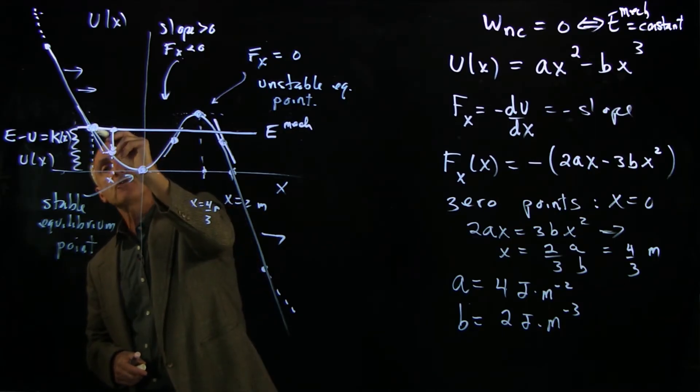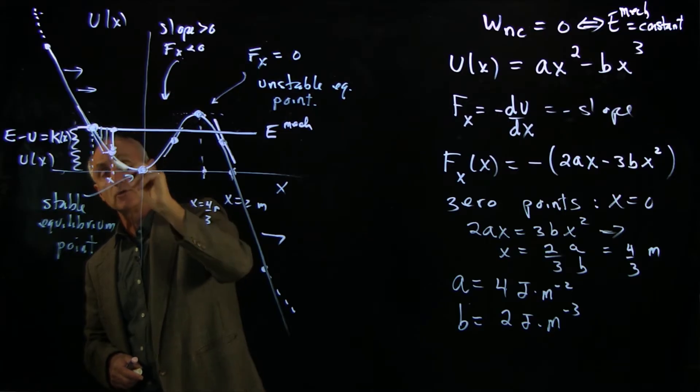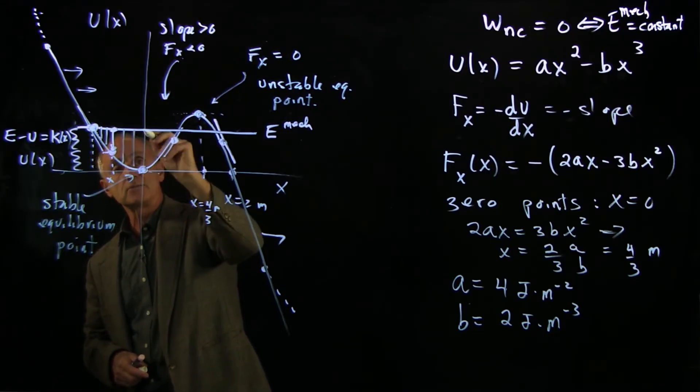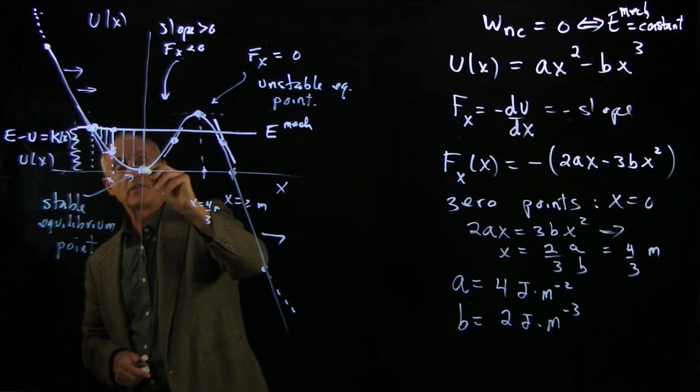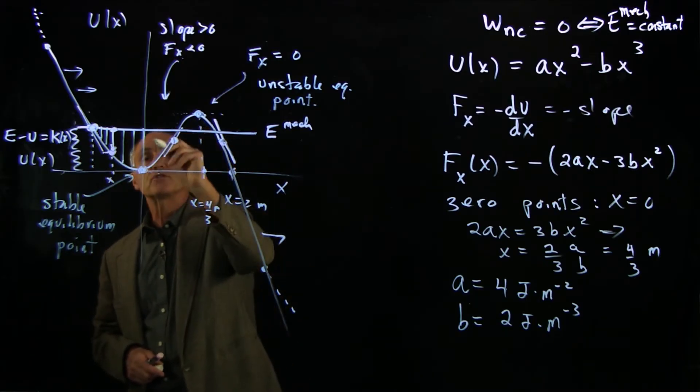And as a particle starts to move, let's say it has a little bit of energy, it starts to move in this direction. Then the kinetic energy starts to increase until we get to this point where the kinetic energy is maximum at the stable equilibrium point, where the force is zero.